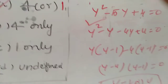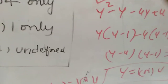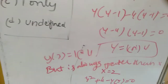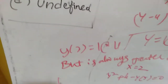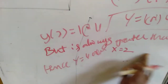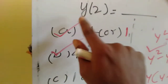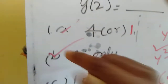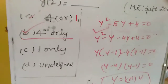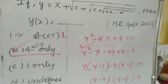However, there is a trick in this question: y is always greater than x. Since x equals 2, y must be greater than 2, hence y equals 4 only. The correct option is B. In the exam you should not put option A. The correct answer is 4 only, because y is always greater than x. Thanks for watching.